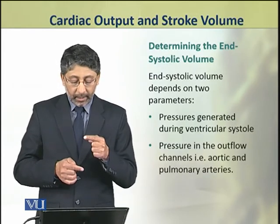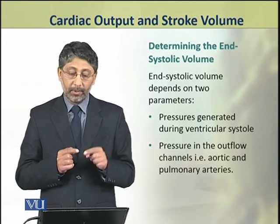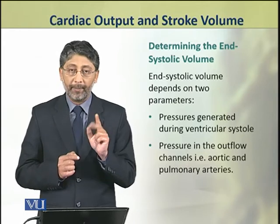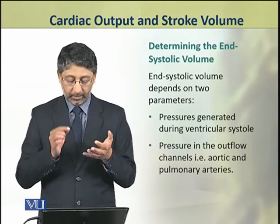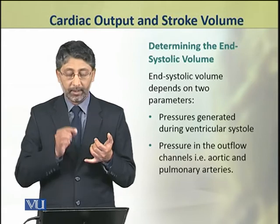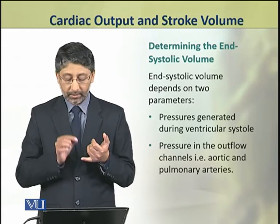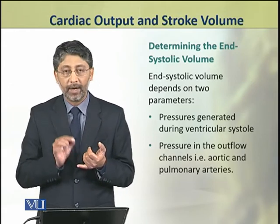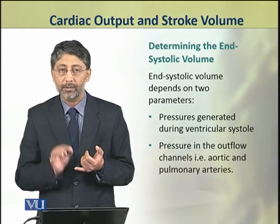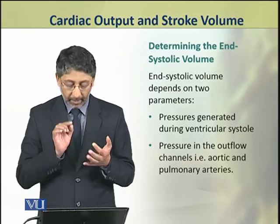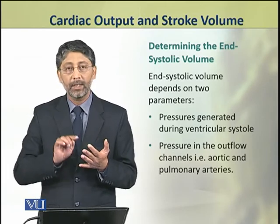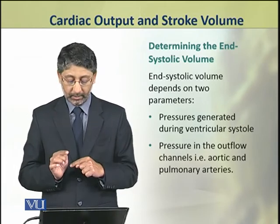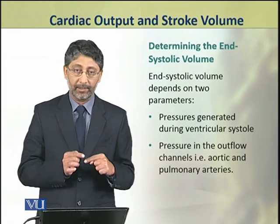The end systolic volume depends on two parameters: number one, the pressures generated during ventricular systole, and the pressure in the outflow chambers or channels — that is, the aortic and pulmonary arteries.